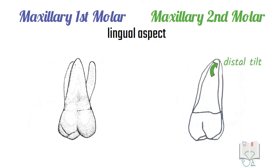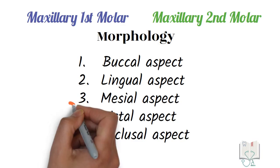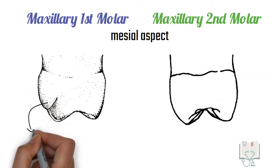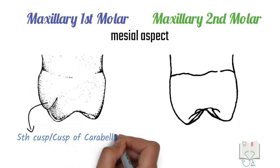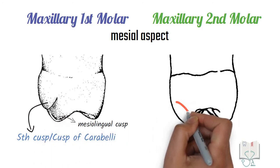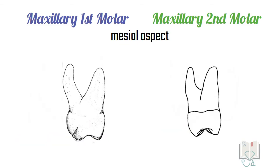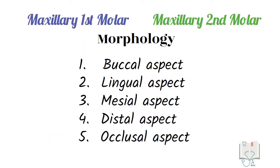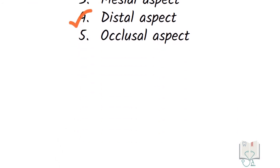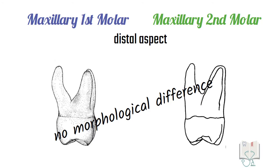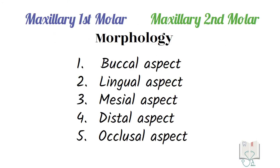Coming to the roots from the lingual aspect, the distal tilt is seen in the second molar and absent in the first molar. Next, the mesial aspect: most of the features are the same, but similar to the lingual aspect, the main difference seen is the appearance of the fifth cusp on the mesiolingual cusp, which is not present in the second molar. No major difference is seen in the roots. From the distal aspect, there is an absence of any morphological difference between the two molars.